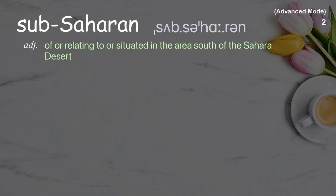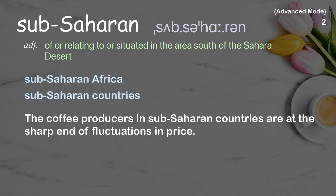Sub-Saharan: of or relating to or situated in the area south of the Sahara Desert. Examples: sub-Saharan Africa, sub-Saharan countries. The coffee producers in sub-Saharan countries are at the sharp end of fluctuations in price.